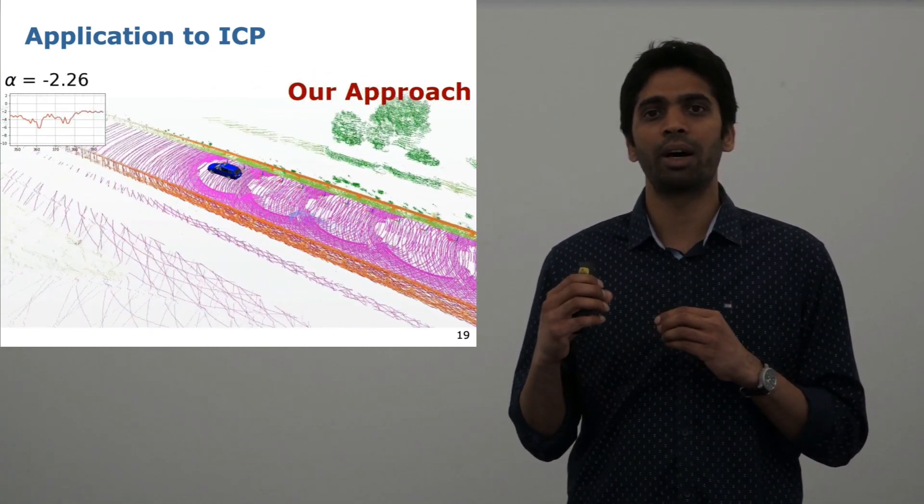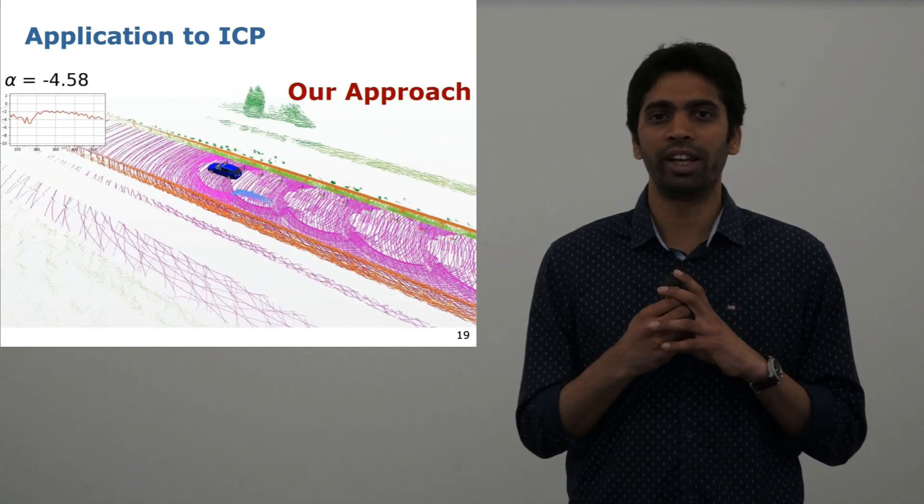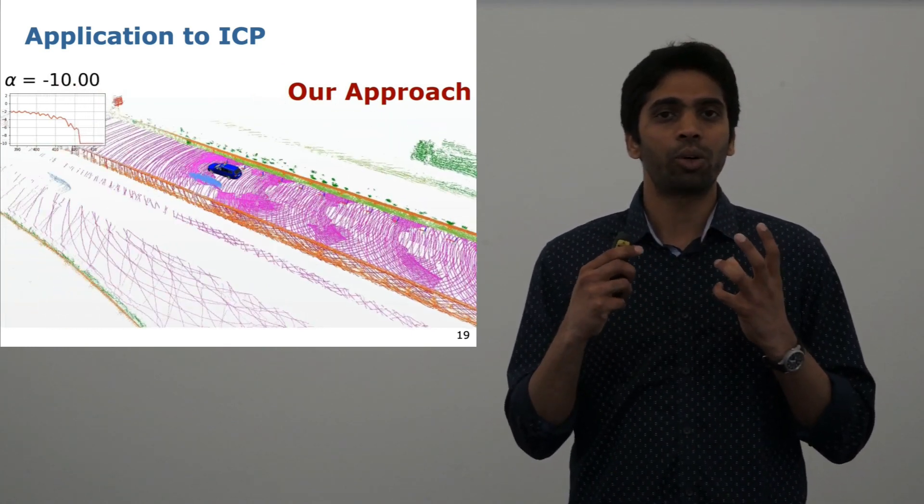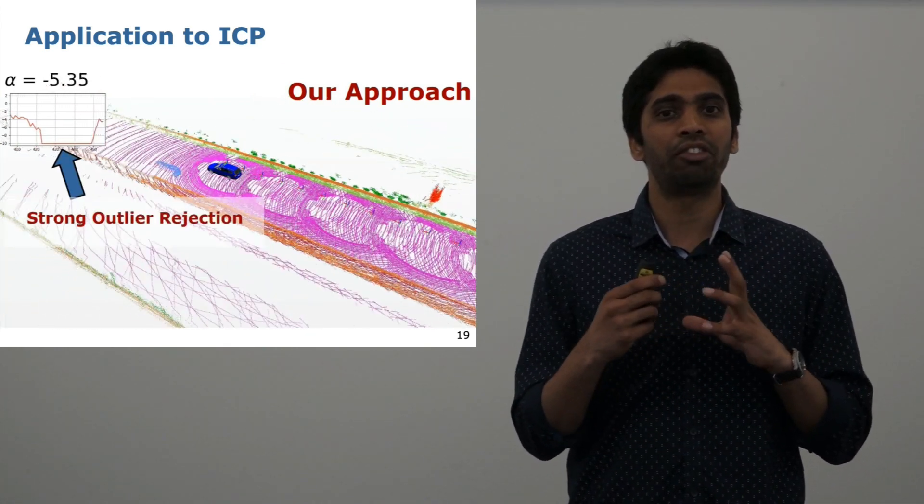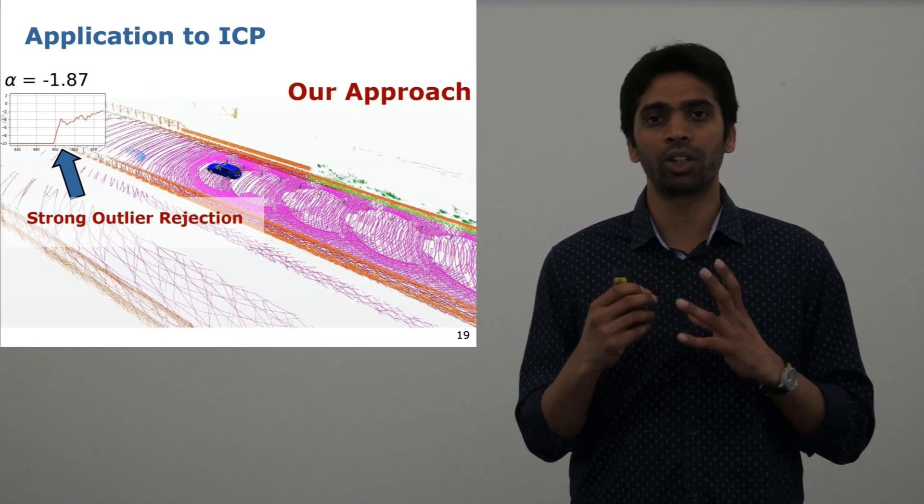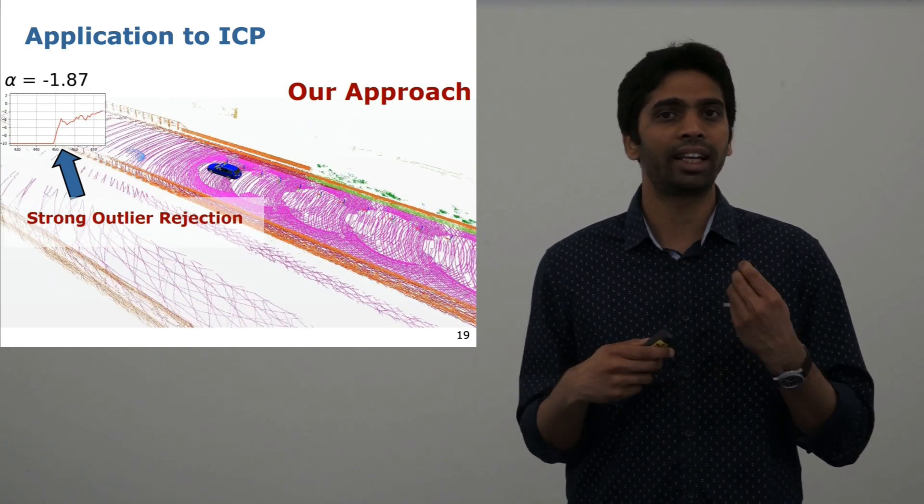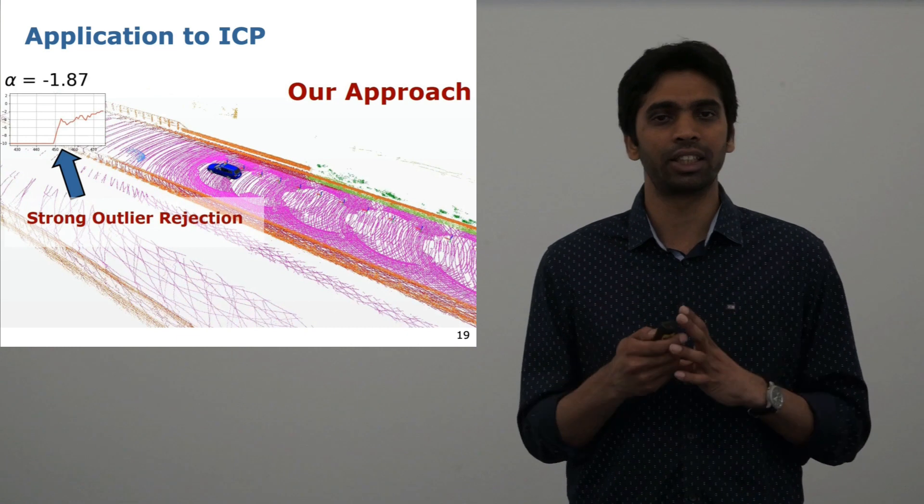Whereas using our approach, as this moving car approaches our EVO vehicle, the alpha goes down to a large negative value, effectively strongly rejecting these points on the car, and thereby letting our ICP be successful.